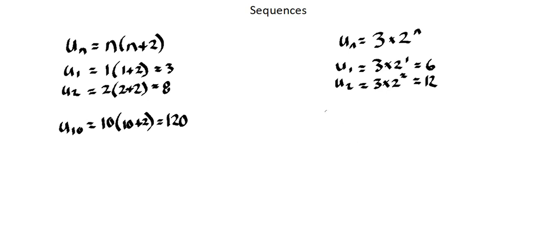I can do something similar with my geometric sequence. Let's find the fifth term. The fifth term is 3 times 2 to the power of 5, which is 3 times 32, or 96.